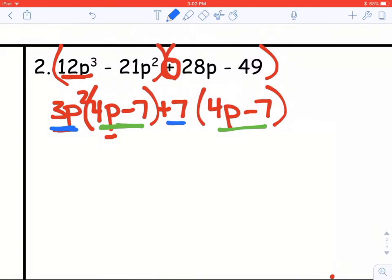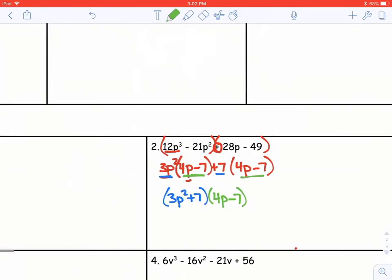So now let's write them together. So we have 3p squared plus 7 would be our first factor. And our second factor are the ones I've already underlined in green, but only bring one of those down. You only need one. Alright, let's look at another example.